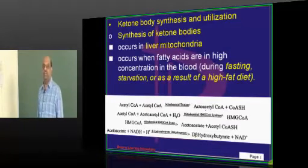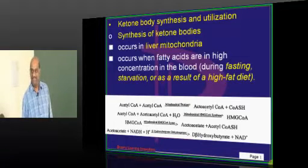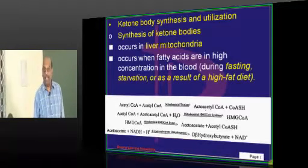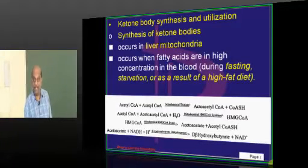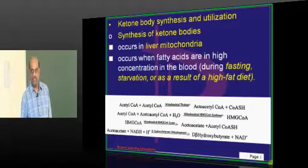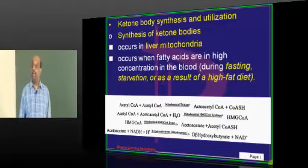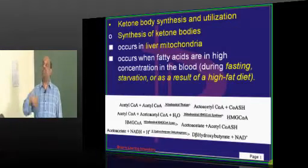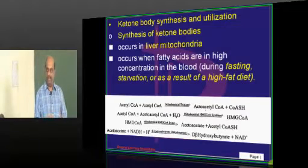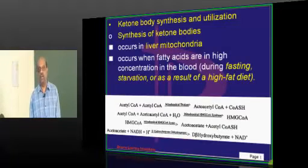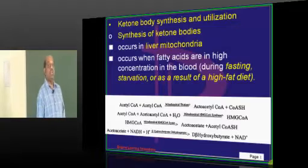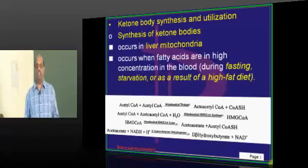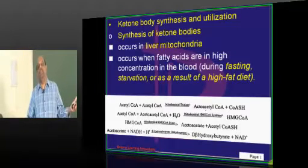So immediately what will it do? It will take a little lipid, do beta-oxidation, form acetyl-CoA. Acetyl-CoA doesn't need insulin to be taken up by the cells. So it will send them. But after preparing acetyl-CoA by beta-oxidation, can the mom send it directly? It has to put it in a tiffin carrier and send it to the kids who are hungry in school. That tiffin carrier in which acetyl-CoA molecules are packed is called ketone bodies.